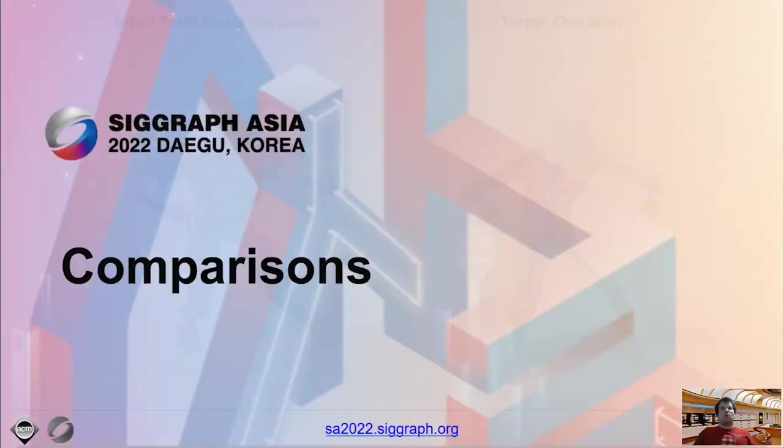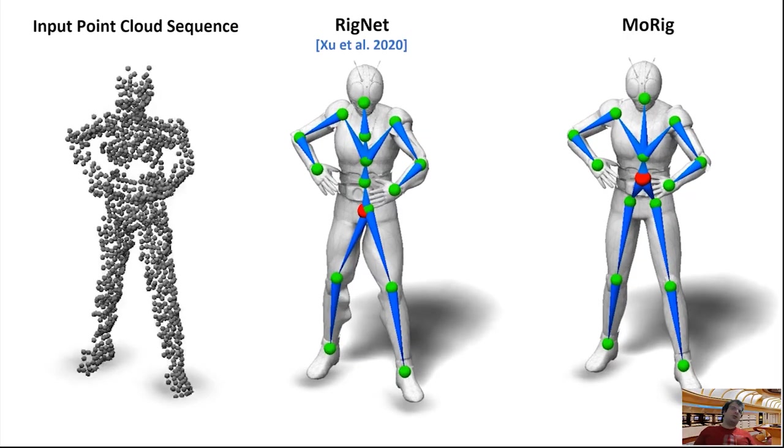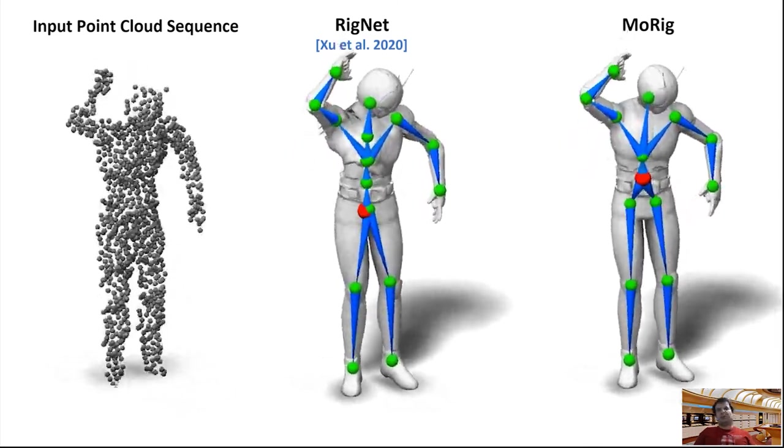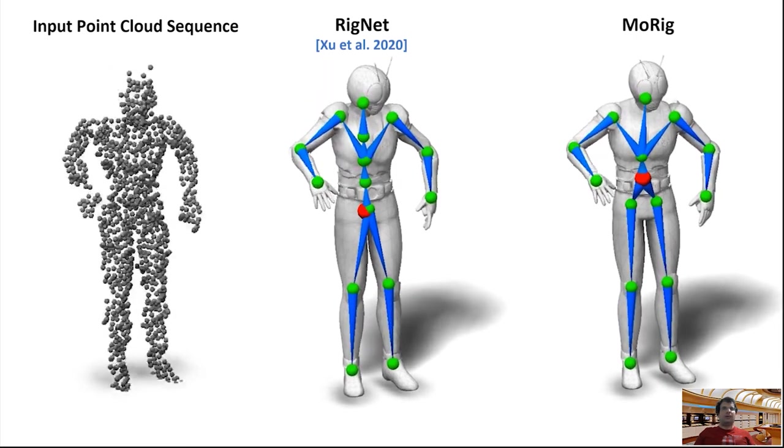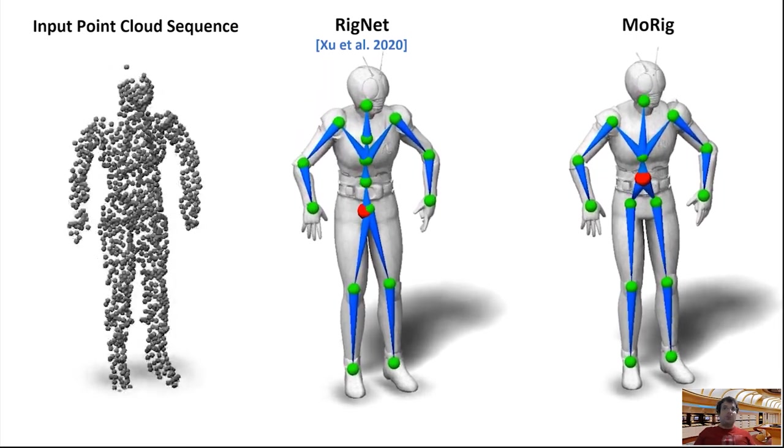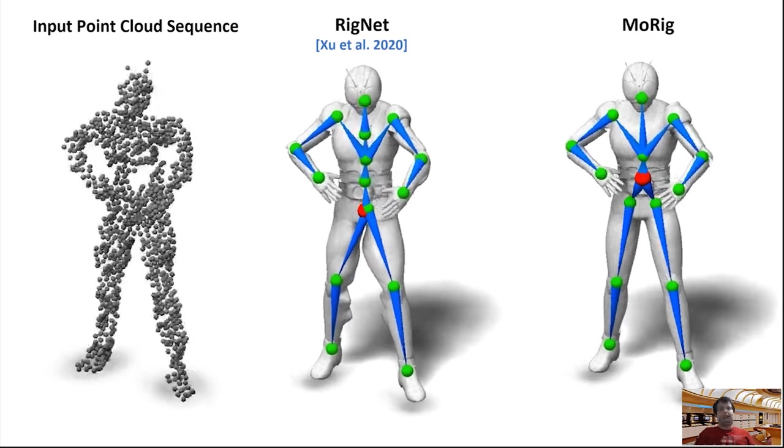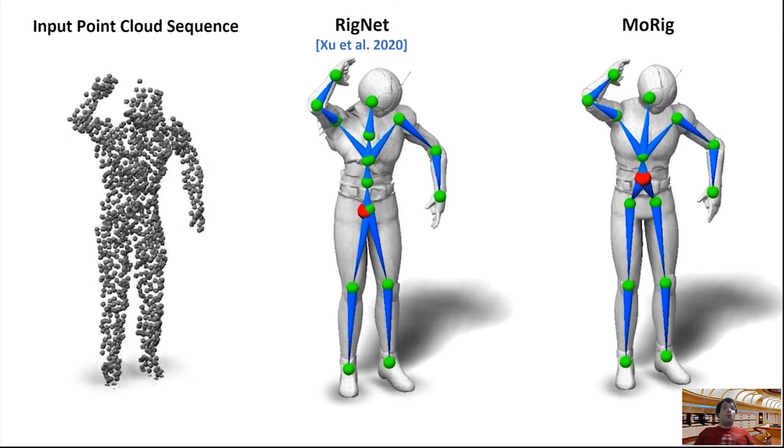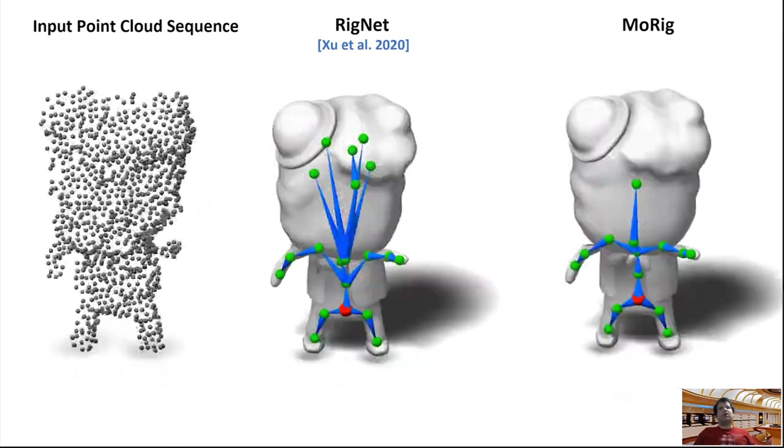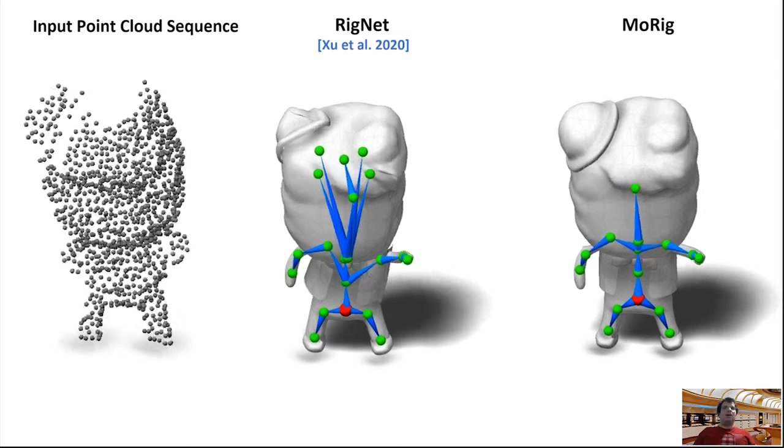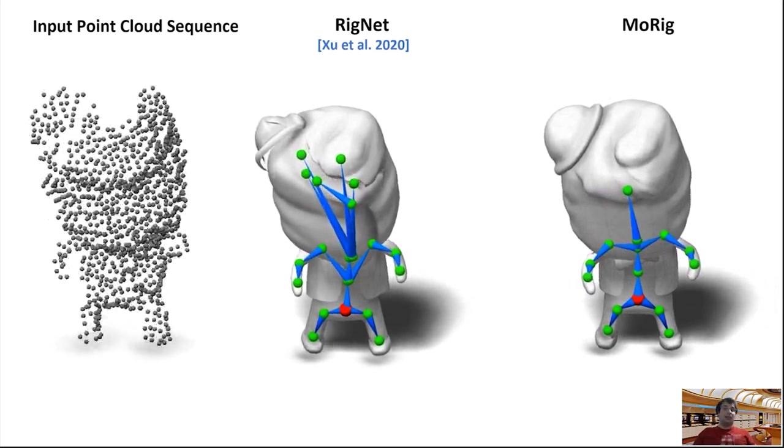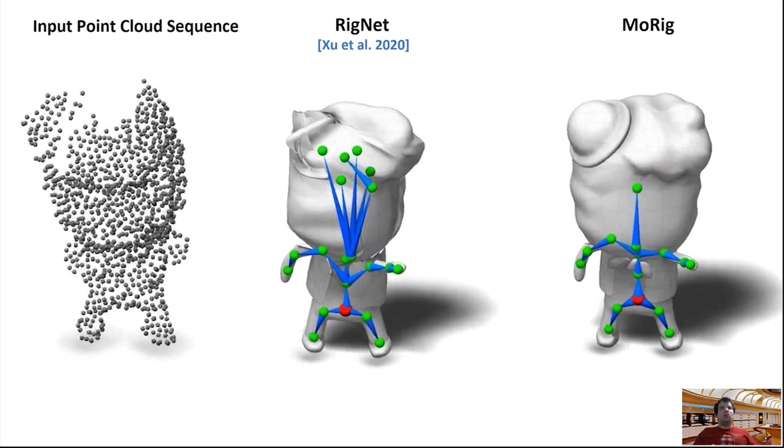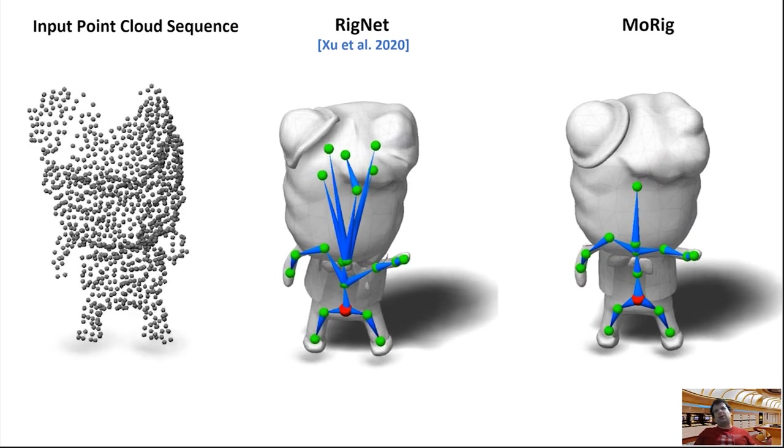Let's now show some comparisons. This is a comparison with RigNet. On the left, we show the test input point cloud sequence. In the middle, we show the skeleton predicted by RigNet. As you see, it misses important joints such as the hips. MoRig produces a more complete skeleton, resulting in a more plausible motion transfer. Here is another example from our test set. RigNet creates several unnecessary joints in the head and results in distorted head deformations. MoRig produces a more plausible skeleton and animation.